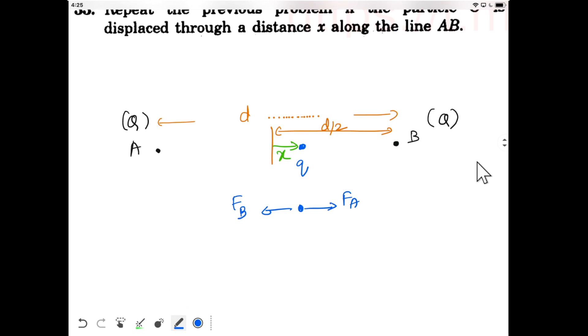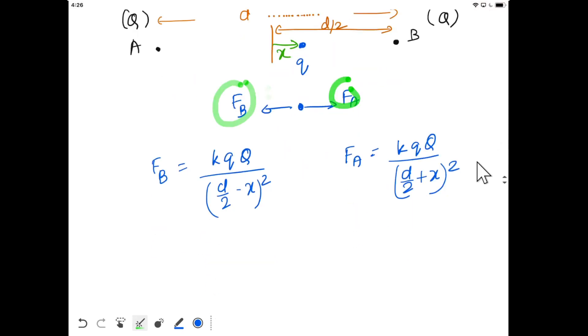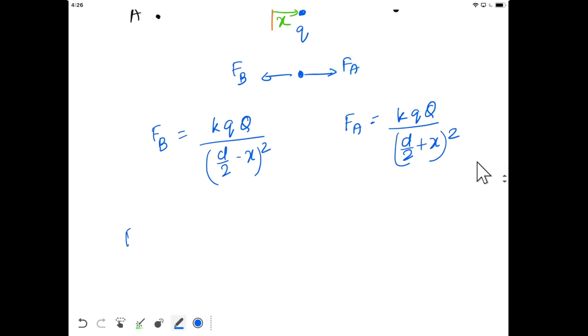F_B will be kQq/(d/2 + x)². What is the net force? Net force will act in this direction because F_B is more than F_A in this situation. Net force will be F_B minus F_A.